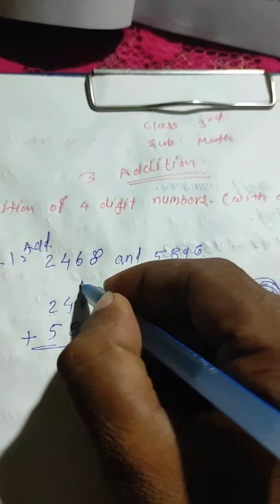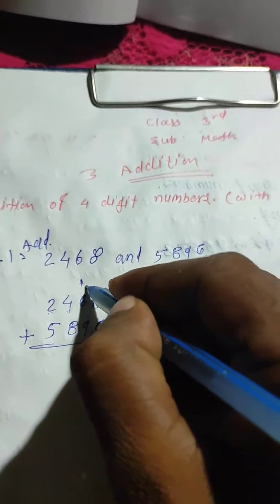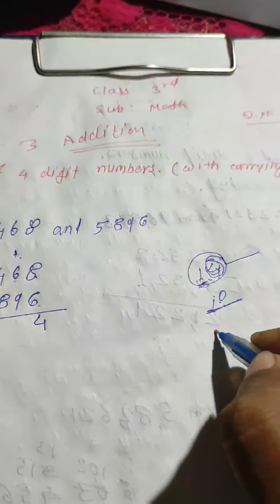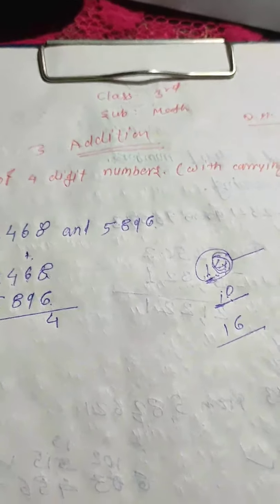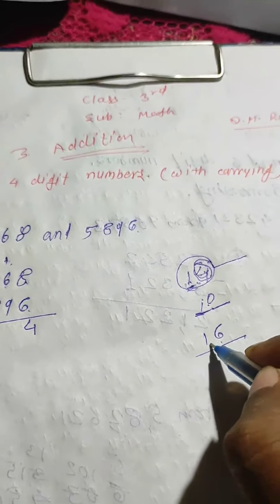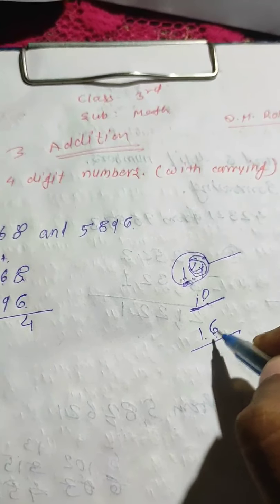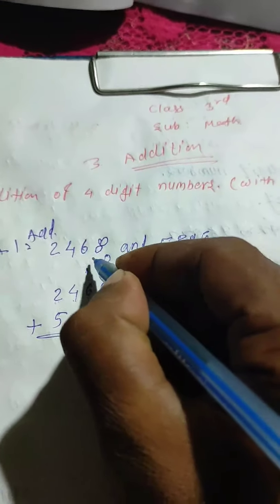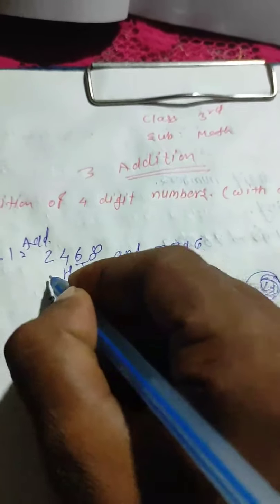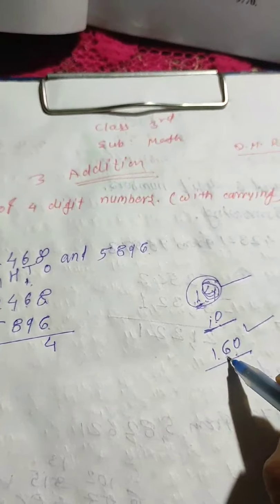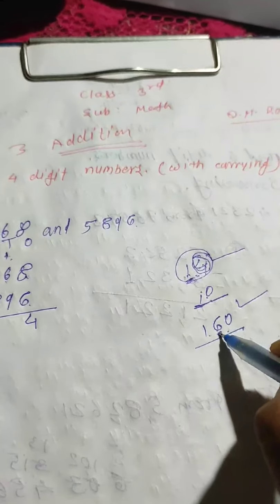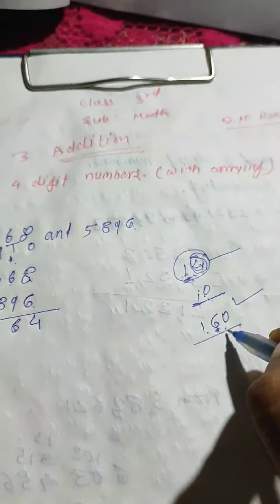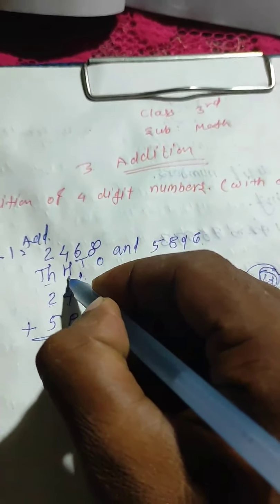One ten is carry - you carry one to the tens place. Six plus one is seven, then seven plus nine is sixteen. So sixteen tens - one digit is six, one digit is one - giving one hundred sixty. So write six in the tens place, and carry one to the hundreds place.